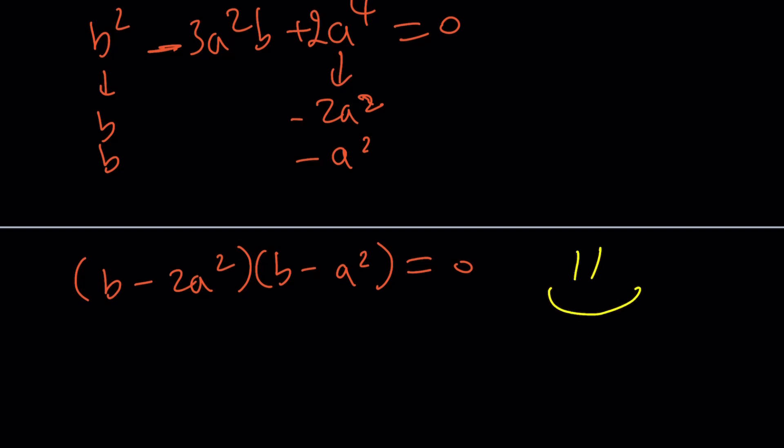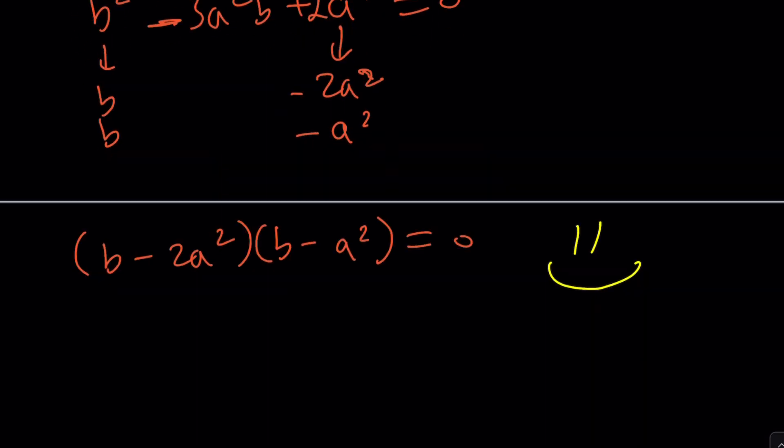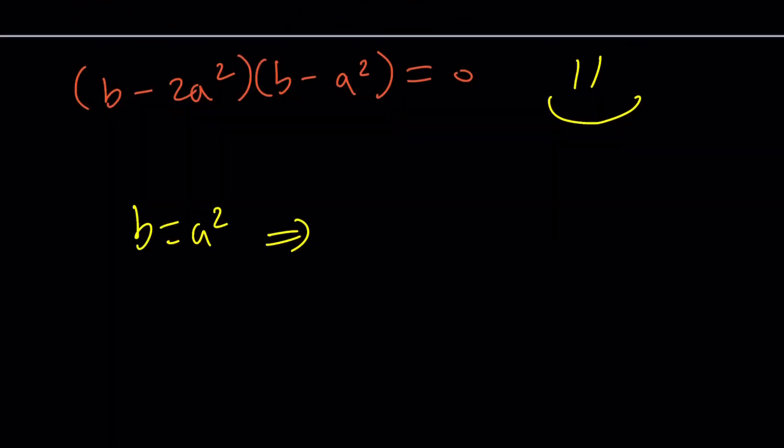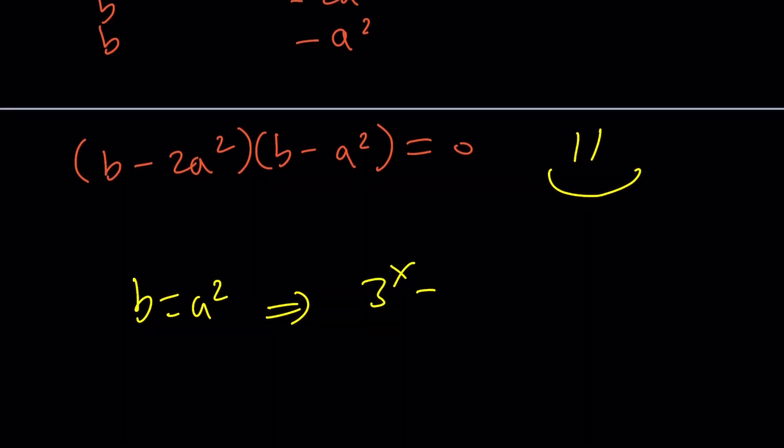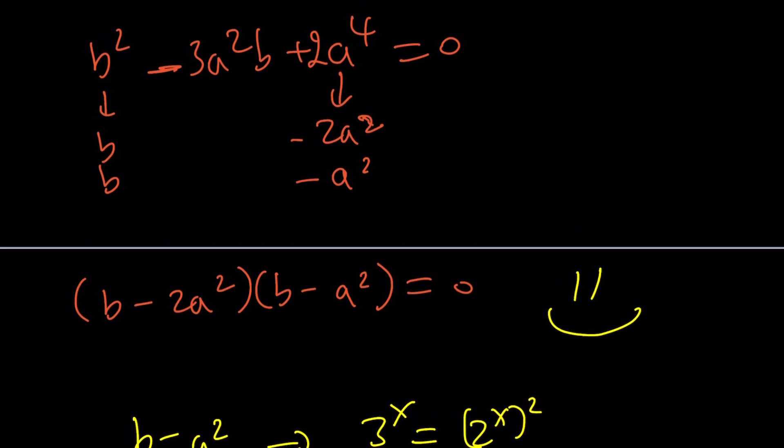And of course, this is one of the solutions. Oopsies. I didn't do the other one. b equals a squared is going to give us what? Let's go ahead and check it out. We said that b equals a squared. So b is 3 to the x. And a is 2 to the x squared. So this is 3 to the x equals 4 to the x. And this gives us x equals 0. Because if you divide both sides by 4 to the x, you get this. And the only way this is going to happen is with x equals 0. So that's going to be another solution that we find. So there are two solutions to this equation.